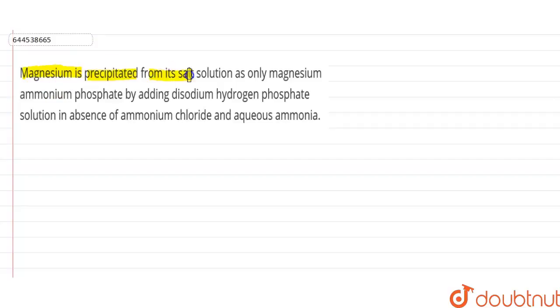Magnesium is precipitated from its salt solution as only magnesium ammonium phosphate by adding disodium hydrogen phosphate solution in absence of ammonium chloride in aqueous ammonia. So magnesium we can only precipitate in form of magnesium ammonium phosphate.